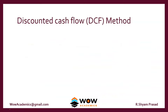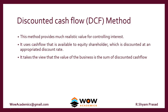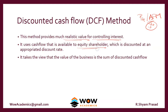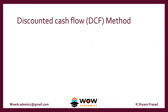We'll move on to the next method, called the Discounted Cash Flow method. You might get a two-mark question on this method in your exam, but in the P4 or FM exam this is an important part of the syllabus. This method provides a much more realistic value for a controlling interest. It uses cash flows available to equity shareholders, discounted at an appropriate rate, and takes the view that the value of a business is the sum of discounted cash flows.